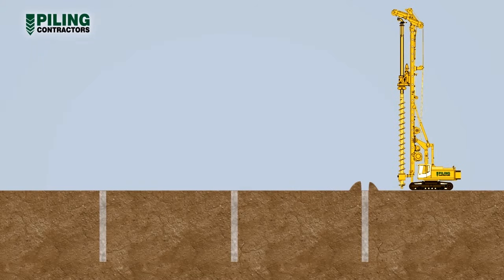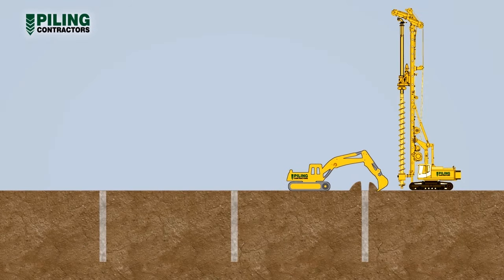Once the tip of the auger returns to ground level, concrete pumping ceases. The accumulated soil is then cleared away from the pile head.